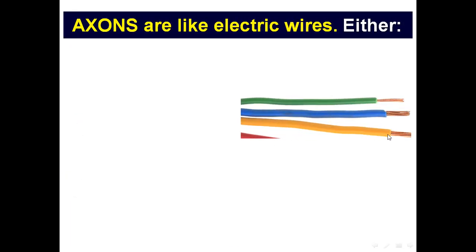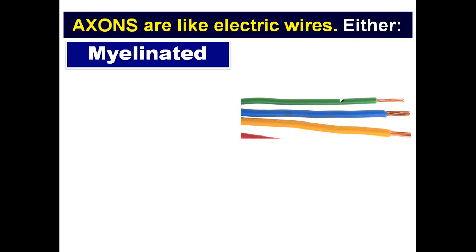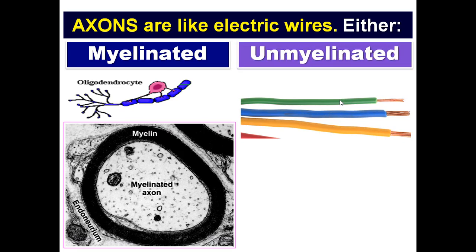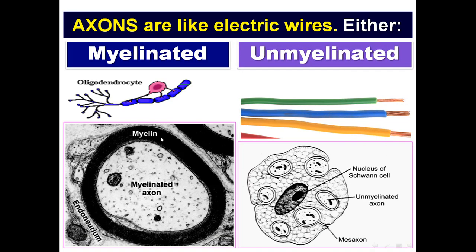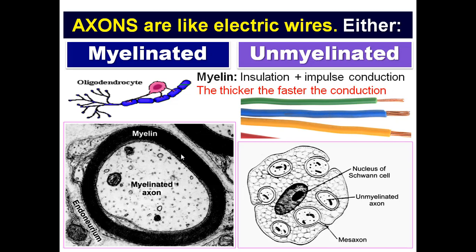Axons are like electric wires. Axons are either myelinated or unmyelinated. The myelin is very important for insulation of the axons and for impulse conduction. The thicker the myelin, the faster the conduction. Therefore, myelinated axons have a fast conduction rate, and unmyelinated axons have a low conduction rate.